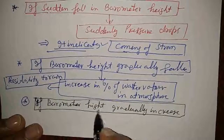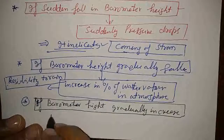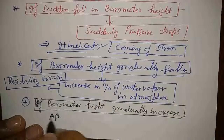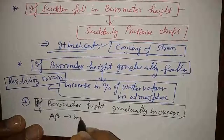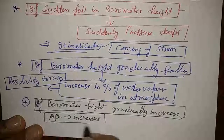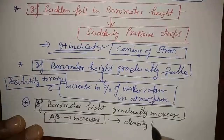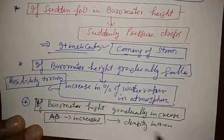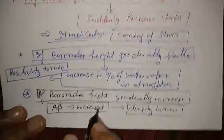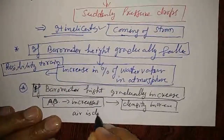It means atmospheric pressure is slowly and gradually increasing. Atmospheric pressure increasing means density is increasing. It means the water vapor component is decreasing — the air is becoming dry.